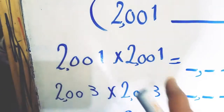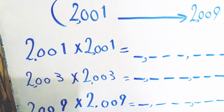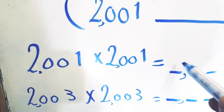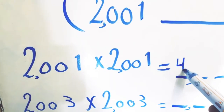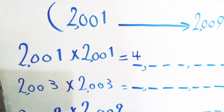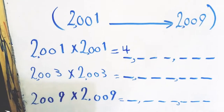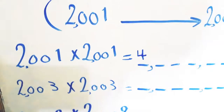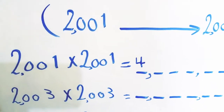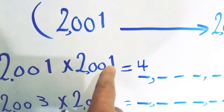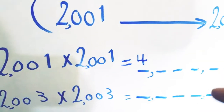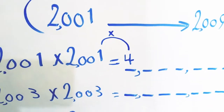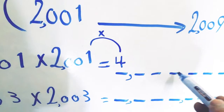We multiply 2 by 2: 2 times 2 equals 4, we write 4. The second step: we multiply this product by the last digit, so we multiply 4 by 1. 4 by 1 equals 4.